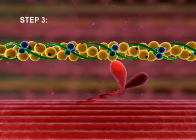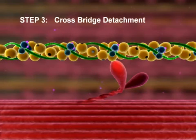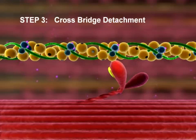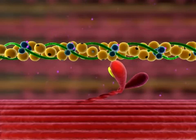Step 3: Crossbridge detachment. When another ATP binds to the myosin head, the link between the myosin head and actin weakens, and the myosin head detaches.